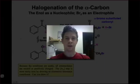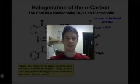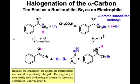Halogenation of the alpha carbon is the subject of this webcast, and provides a nice example of the reactivity of enols and enolates towards electrophiles.